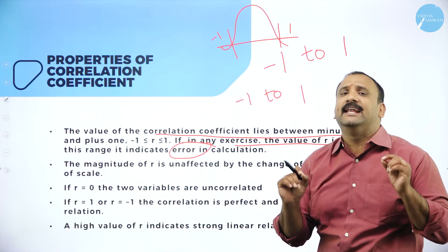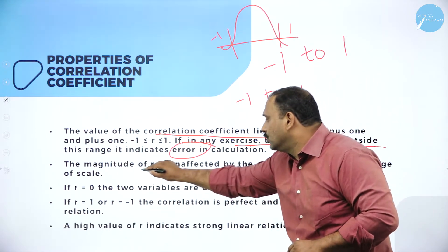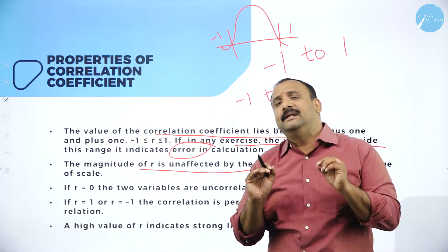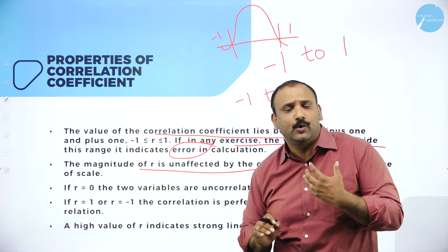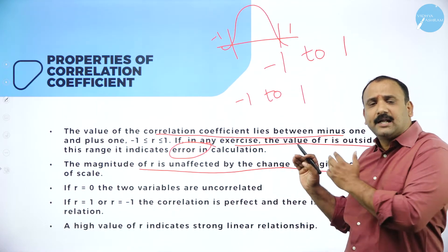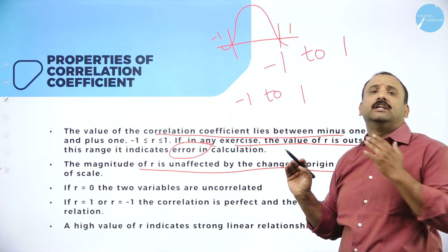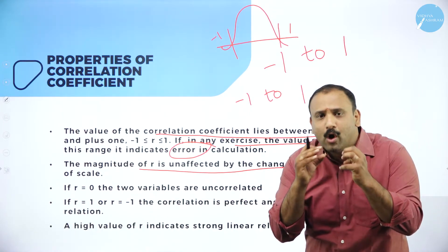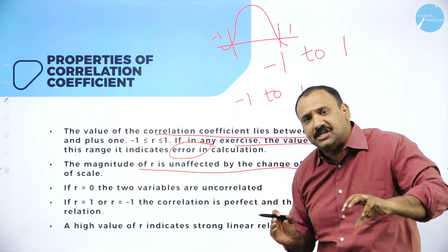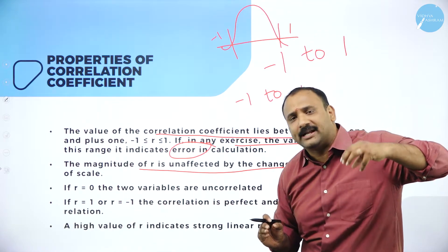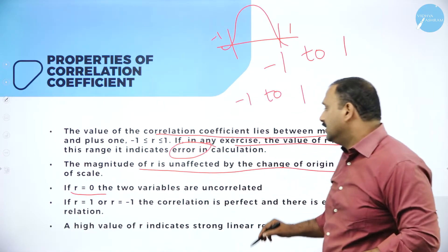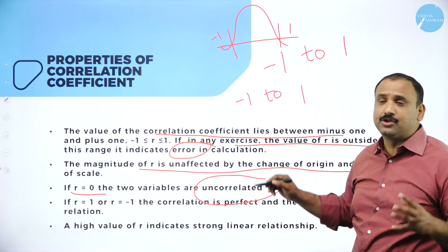The magnitude of r is unaffected by the change of origin and scale. r is an independent variable — it's not going to be affected by scale, magnitude, or how it is presented. r only measures the correlation coefficient; it is a measurement tool and does not get into causation or deep root analysis. If r is zero, the two variables are uncorrelated — they are not related at all.